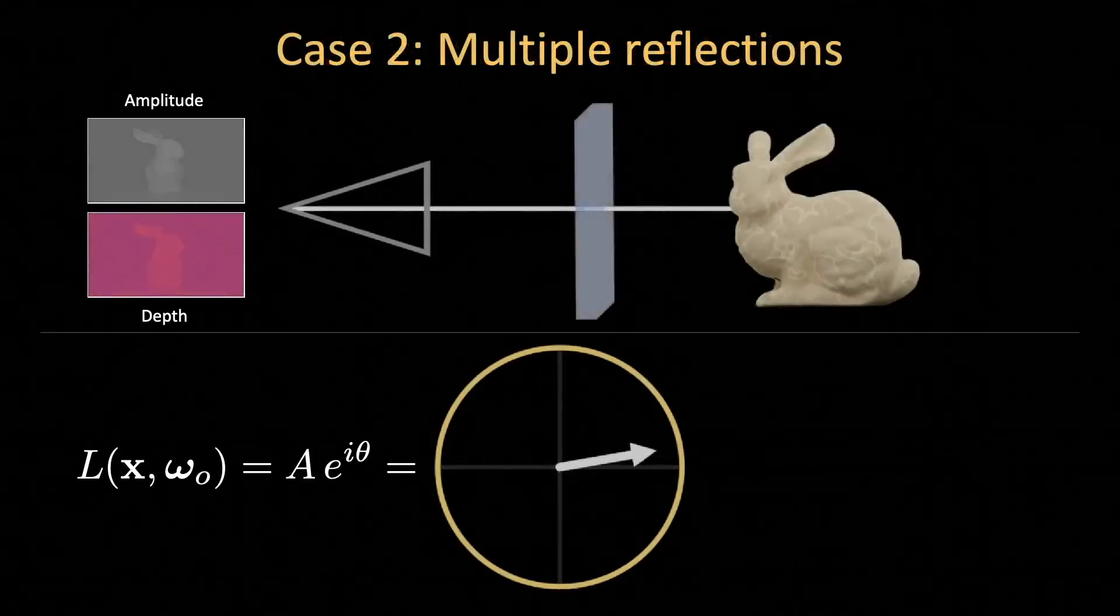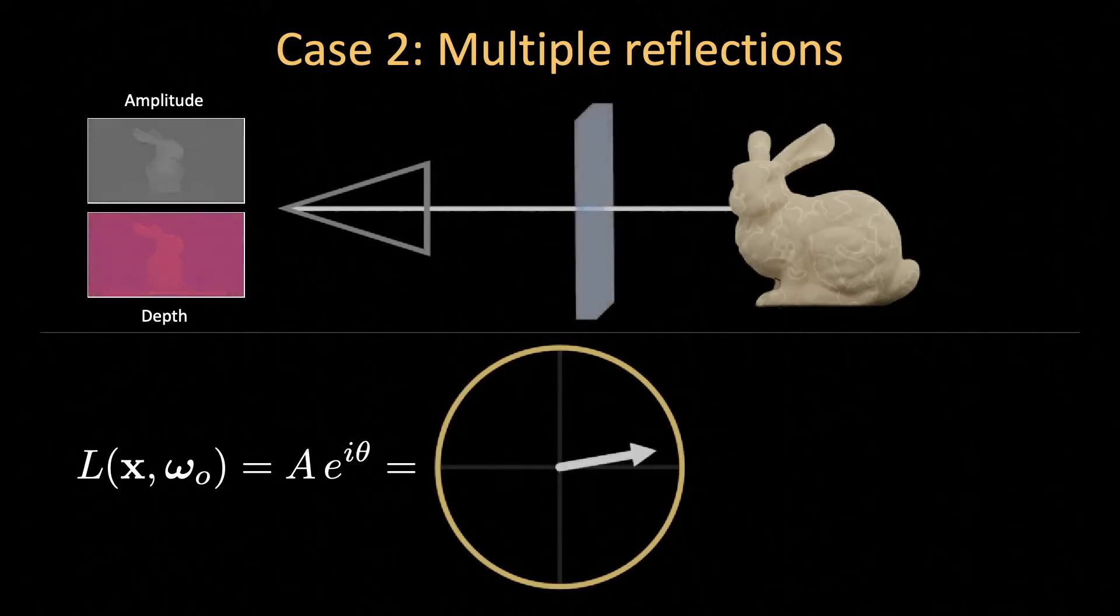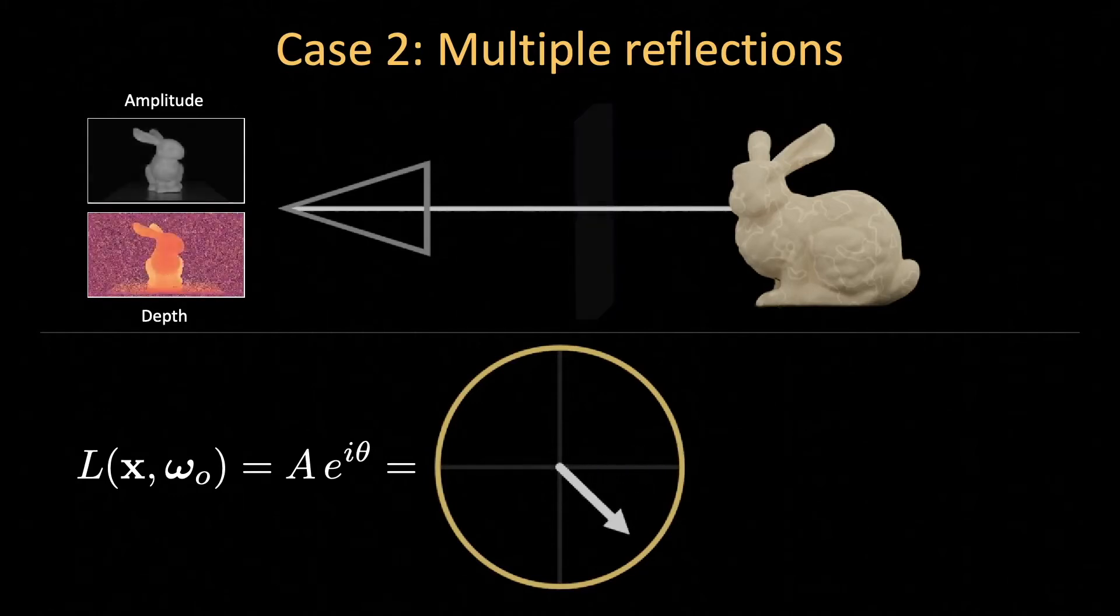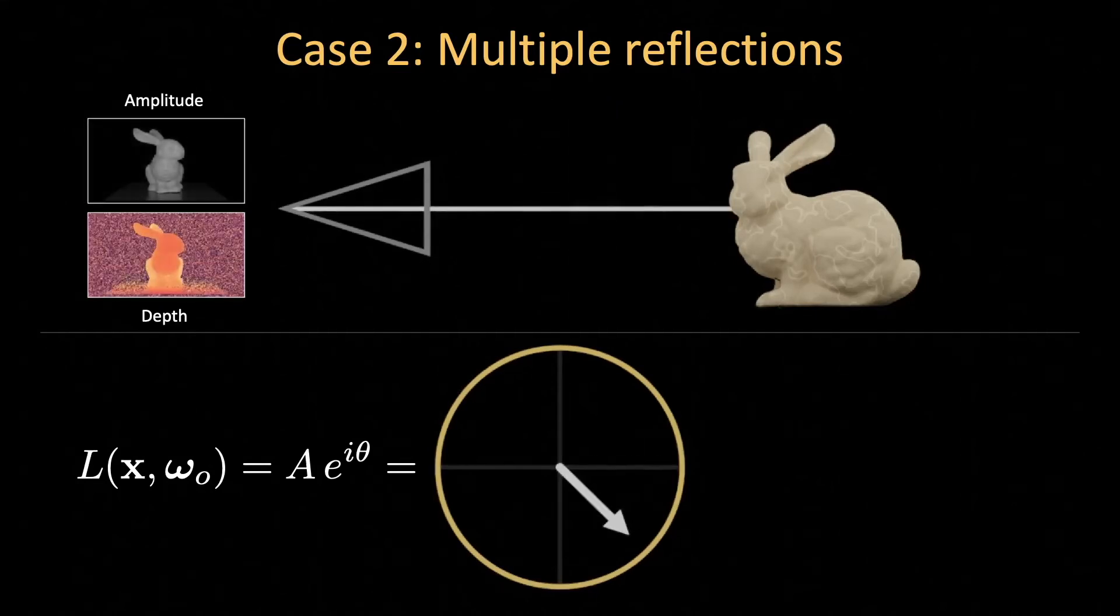Second, in practice, continuous wave time-of-flight sensors integrate multiple light paths from potentially many points along a ray. For example, when a scene contains partially transparent surfaces, a pixel will receive light from multiple points in a scene. As a result, the phase becomes biased, and will no longer be proportional to depth.